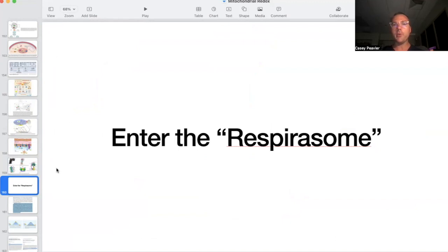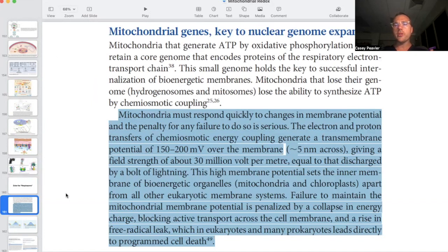We are going to talk about the respirosome. Instead of enter the dragon, enter the respirosome. This is where mitochondrial biology gets very exciting. We're going to talk about first the membrane potential. When you take the 150 to 200 millivolts that are across the inner mitochondrial membrane, and you account for the fact that the membrane width is only five nanometers, tiny, it actually gives a field strength of 30 million volts per meter, which is equivalent to a bolt of lightning. Just think about that for a second.